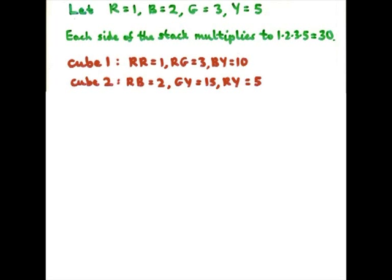And then the second one, if you look at it, you've got red opposite blue, green opposite yellow, red opposite yellow. Red and blue is 2. Green times yellow is 15. Red and yellow is 5. So let's multiply those together. So just for the first two cubes, what have I got? I've got 1 times 2 as a possibility. I don't know which order it's going to be. Let's look at all the possibilities.